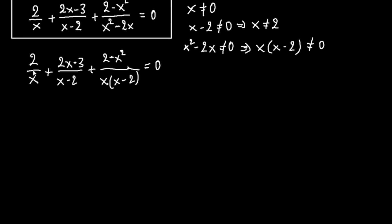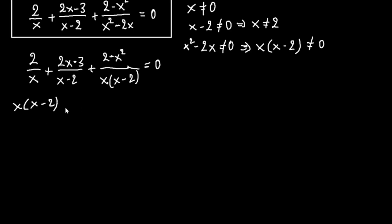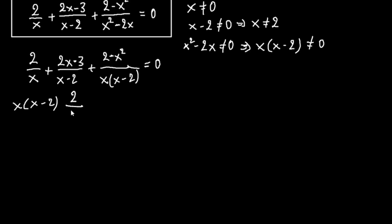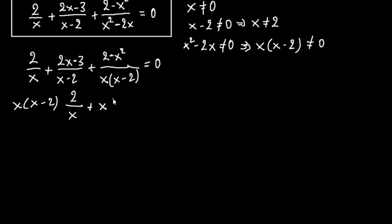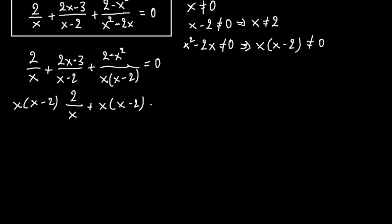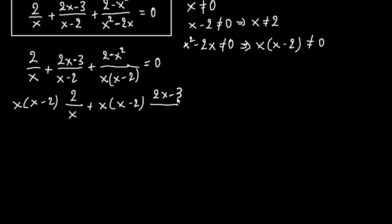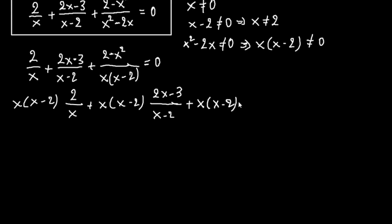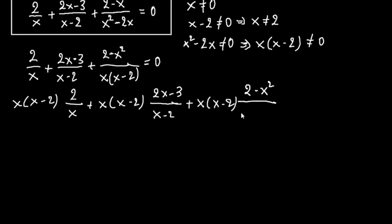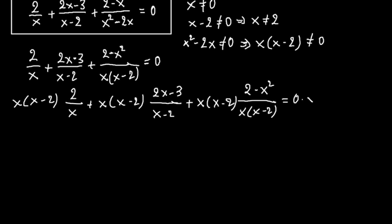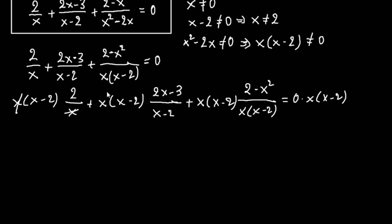Now we must multiply both sides by x times x minus 2. So we multiply each term: x times x minus 2 times 2 over x, plus x times x minus 2 times 2x minus 3 over x minus 2, plus x times x minus 2 times 2 minus x squared over x times x minus 2 equals 0. The denominators cancel out.